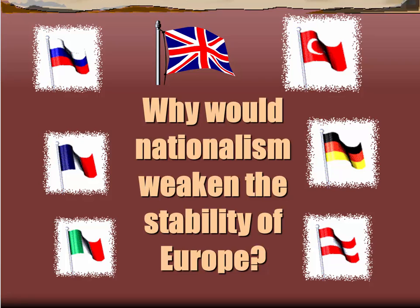The Germans were quite concerned with the formation of the Triple Entente and wanted to test it. So in March of 1905, William II of Germany made a speech calling for Moroccan independence. Morocco at the time was a colony of France, and the German government demanded an international conference to discuss Moroccan independence. The conference was held in 1906, and it basically supported French claims — the incident Germany tried to create was blocked.